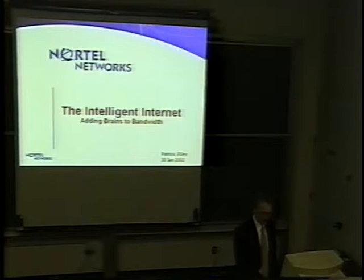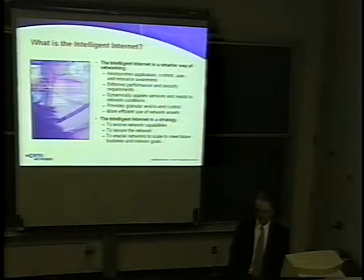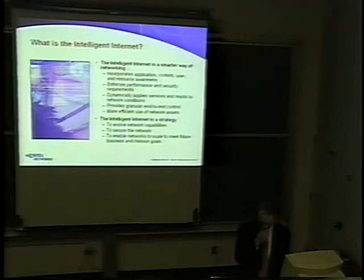So what is the Intelligent Internet? Put simply, by incorporating higher levels of awareness into the network infrastructure — at the subscriber edge as well as the core — the network itself has much greater visibility into the traffic it's carrying. This way it can make more intelligent, faster switching decisions based on the type of traffic and at higher layers of the OSI model.